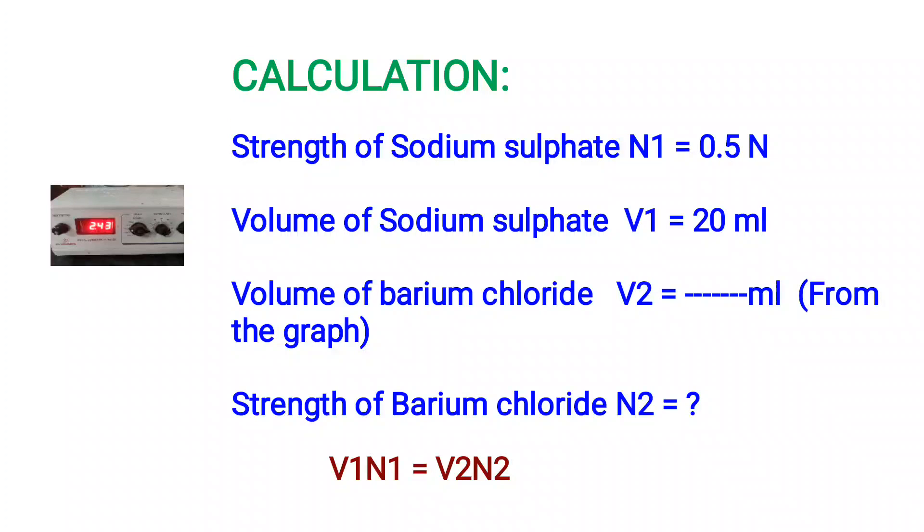Then, we calculate the strength of barium chloride. Strength of sodium sulfate N1 = 0.5 N. Volume of sodium sulfate V1 = 20 ml. Volume of barium chloride V2 is obtained from the graph. From this value using V1N1 = V2N2, we can calculate the strength of barium chloride N2. This graph is same for the titration of strong acid and strong base.